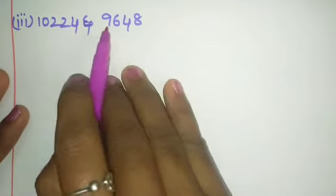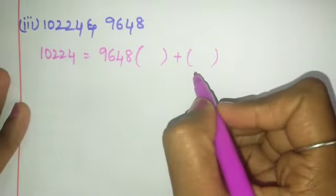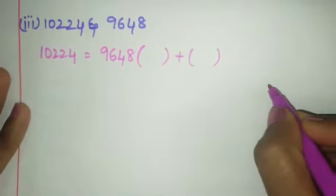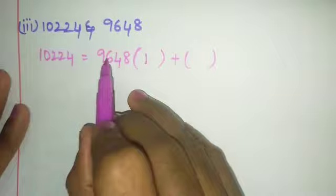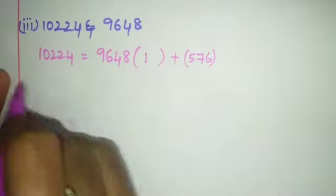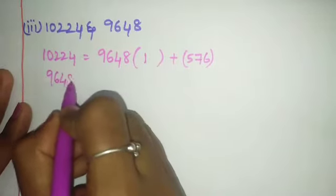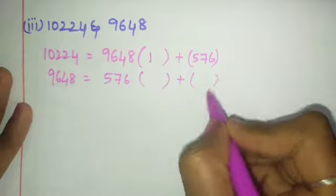Next: find HCF of 100224 and 9648. Take the largest number: 100224 = 9648 × 1 + remainder. Multiplying 9648 by 1, subtract to get remainder 576. Now take 9648 = 576 × something + remainder.